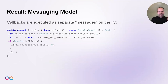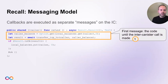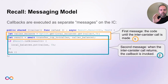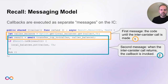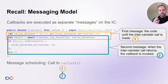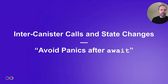Using our message boxes to visualize: the first message covers everything up until we issue the inter-canister call, and the second message is the callback where we return from the transfer call and reset the balance to zero. For an individual call, the ordering is always: first part first, then callback only later.